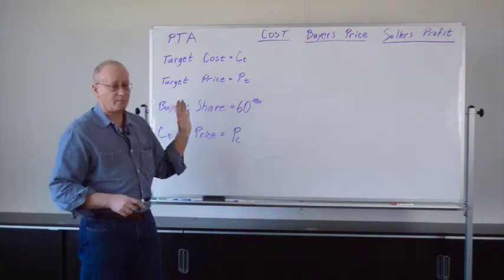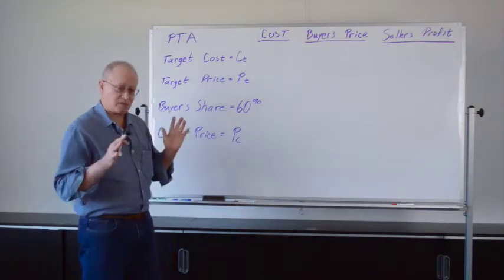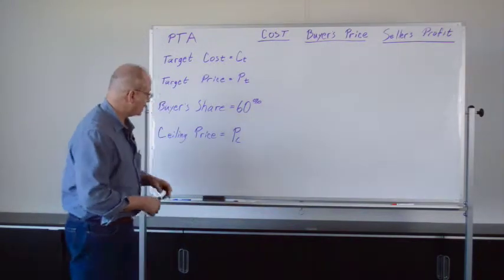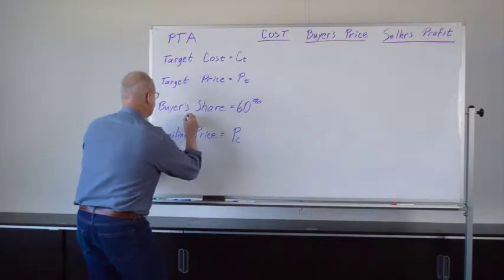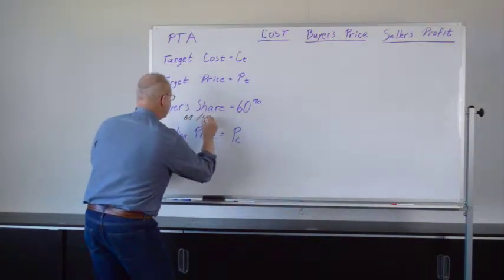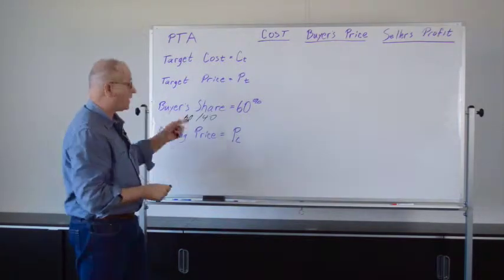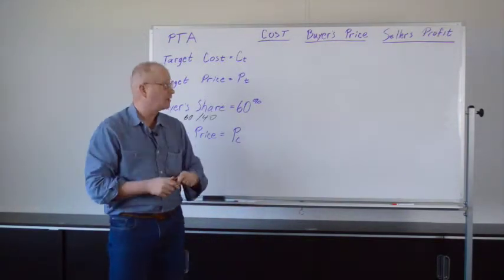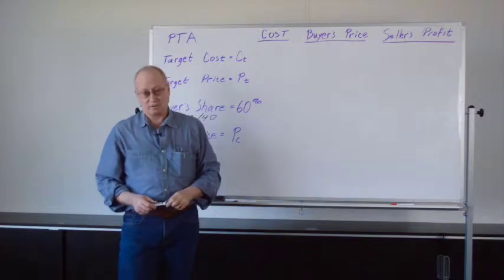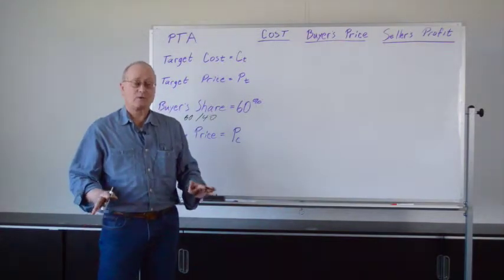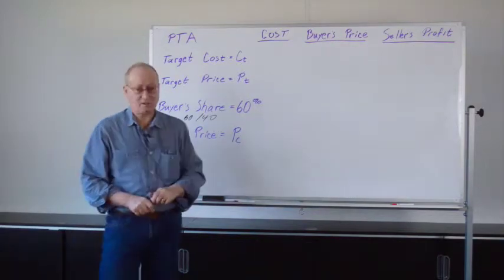So there's going to be this thing called a buyer's share. And just as this example, we're going to take that as 60%. And the convention for writing that is 60-40, where the 60, the first number, is the buyer's share of the cost overrun above the target cost. But this isn't going to continue forever. We're going to have a ceiling price. And we'll call that P sub C.